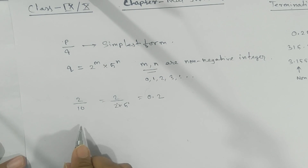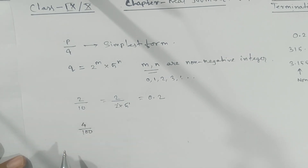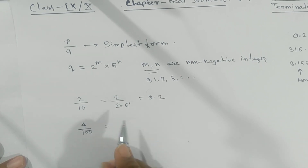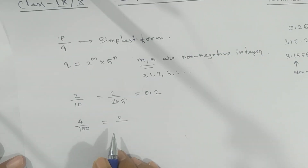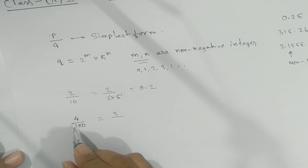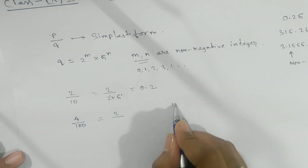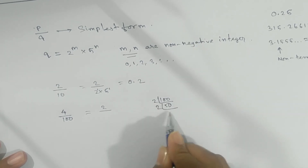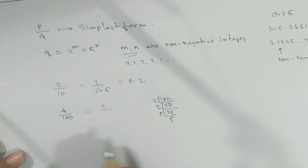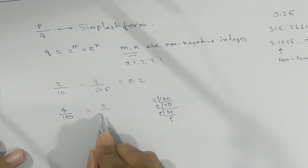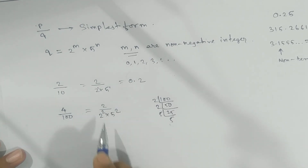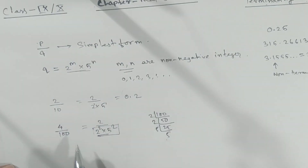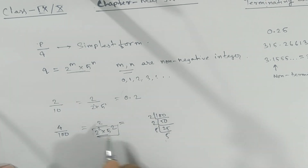If we take 2 by 100, then 100 needs to be converted using prime factorization. I hope you remember how to convert into prime factors. 100 can be written as 2 to the power 2 into 5 to the power 2. This matches the required form, so we can say that 4 by 100 is a terminating decimal, and the decimal value is 0.04.